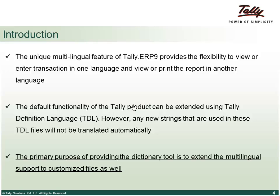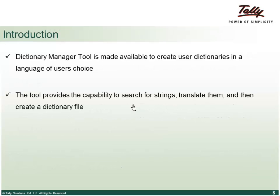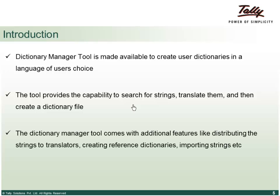The primary purpose of this tool is to extend multilingual capability to customized files. You can also create your own language dictionary. By default, Tally includes languages like Hindi, Marathi, Gujarati, Bengali, Kannada, Tamil, and Arabic. If you want to create dictionaries beyond these defaults, you will need this tool. It provides the capability to search for strings, translate them, generate a dictionary file, distribute strings to translators, create reference dictionaries, and import strings from various places.